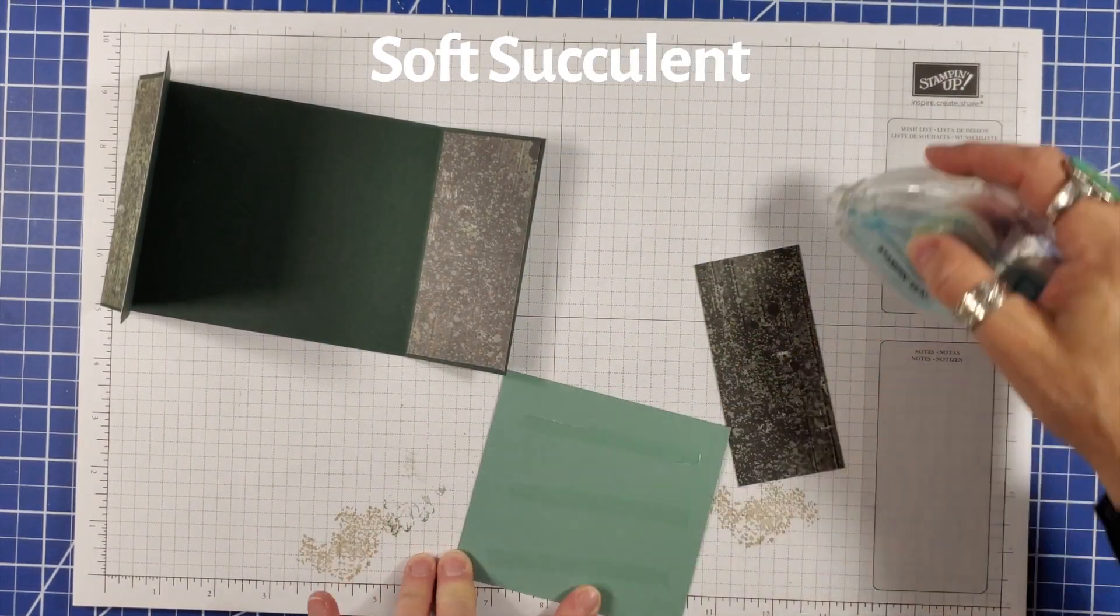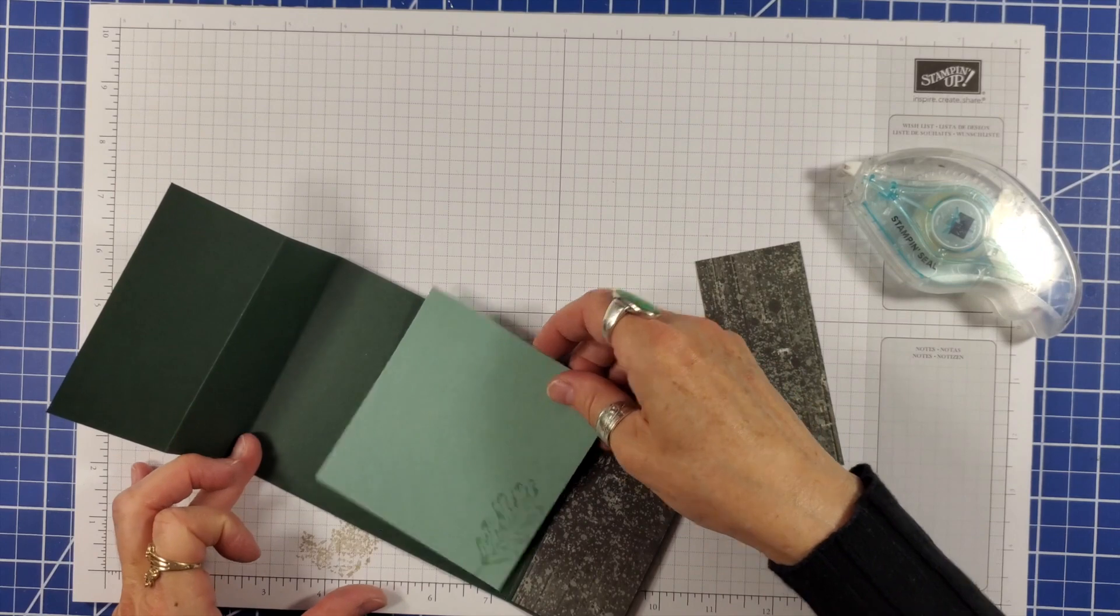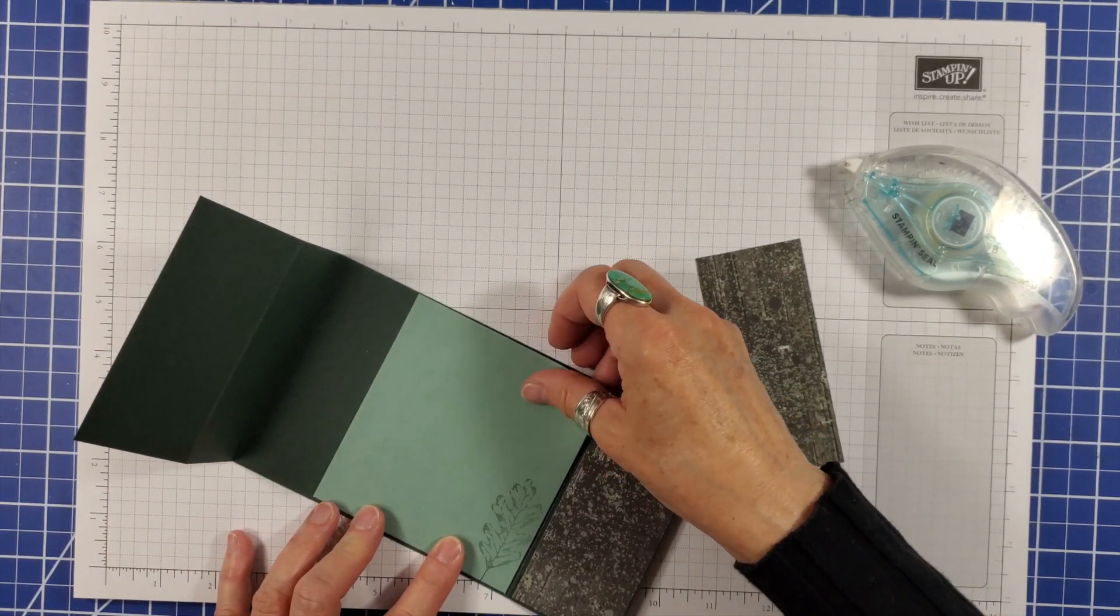I've also stamped the leaf image from the matching stamp set on a piece of soft succulent for the inside of the card.